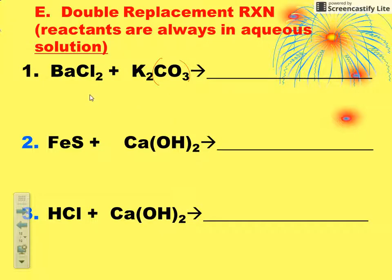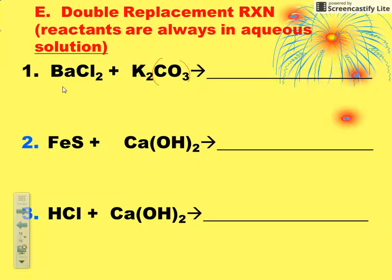I'm going to put parentheses around my polyatomics just to make them easier to identify. Going back to the analogy I gave you in class — you have two compounds, like a couple and a couple. Barium is dancing with chlorine, and potassium is dancing with carbonate. In double replacements, the outer two come together: barium and carbonate pair up on the product side, and the inner two — potassium and chlorine — come together.